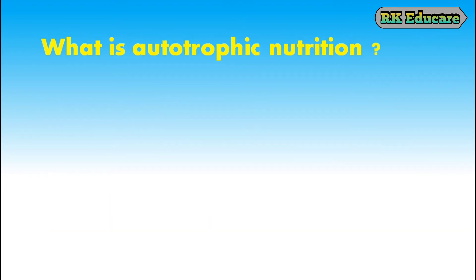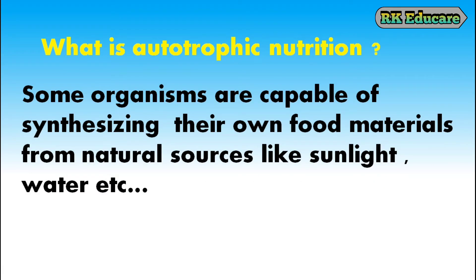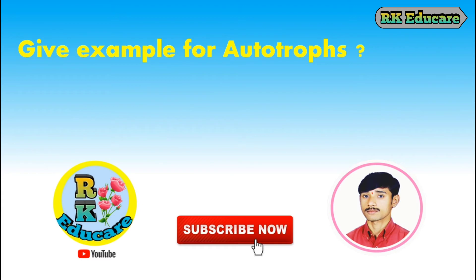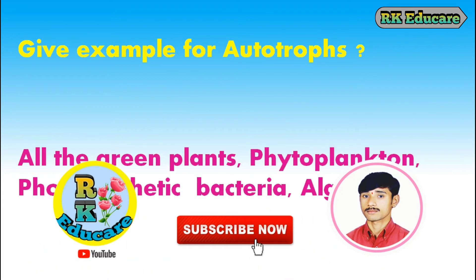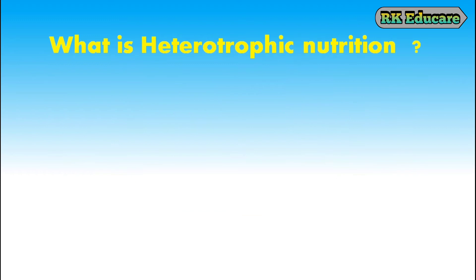What is autotrophic nutrition? Some organisms are capable of synthesizing their own food materials from natural sources like sunlight, water, etc. This is called autotrophic nutrition. Give examples for autotrophs. All the green plants, phytoplankton, photosynthetic bacteria, algae, etc. are examples of autotrophs.